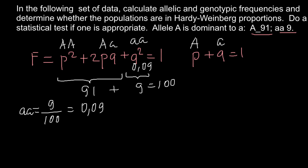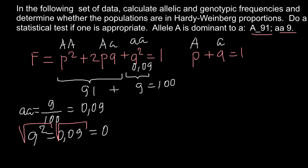We know now that q-squared equals 0.09. To find q, we just take the square root of both sides, and we get q equals 0.3. This is the frequency of q. Since q equals 0.3, we instantly know the frequency of p — it equals 0.7.